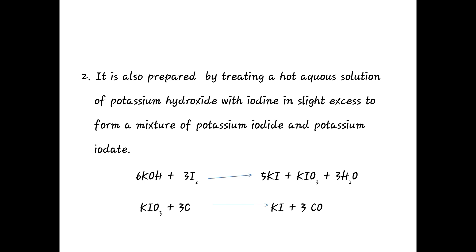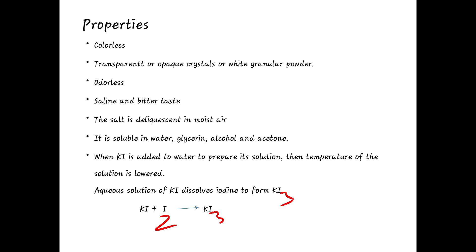The second preparation: potassium iodide is also prepared by treating a hot aqueous solution of potassium hydroxide with iodine in slight excess to form a mixture of potassium iodide and potassium iodate: 6 KOH + 3 I2 → 5 KI + KIO3 + 3 H2O. This potassium iodate then reacts with carbon (3 C) to give potassium iodide plus 3 CO gas. These are the two preparations of potassium iodide.